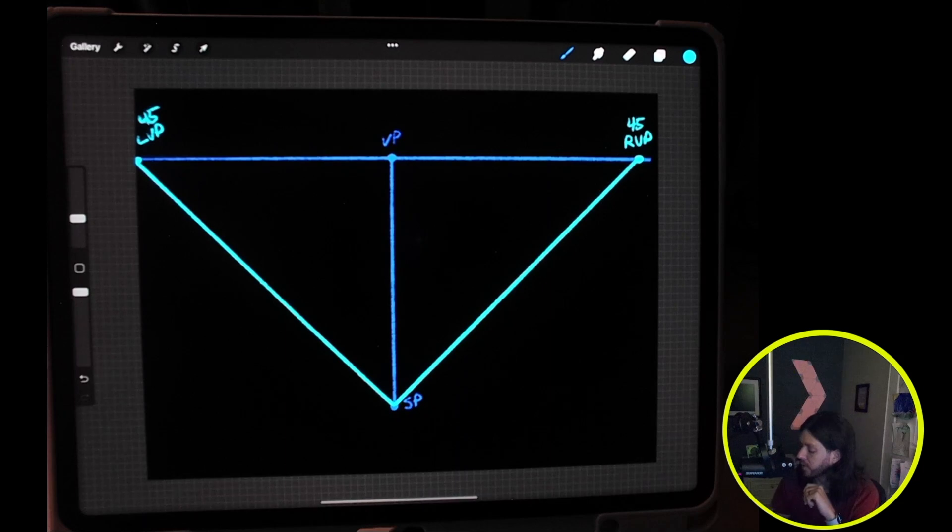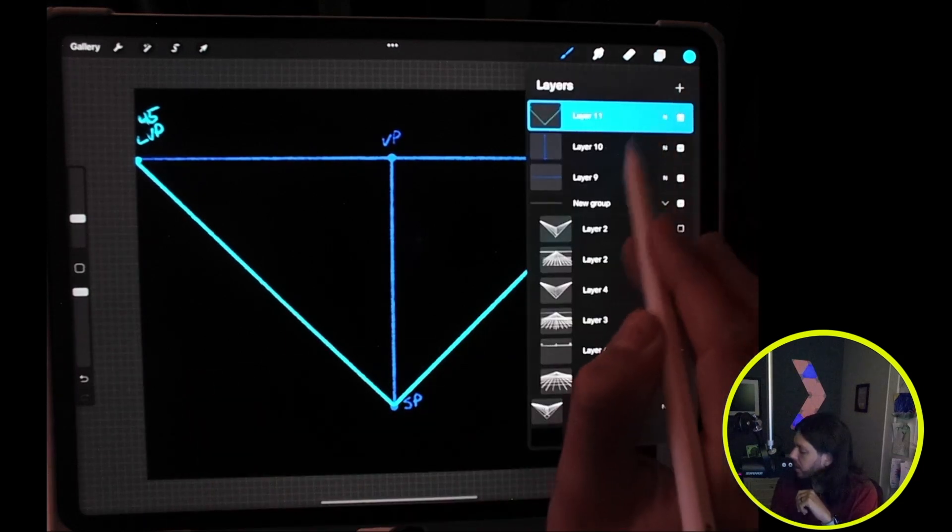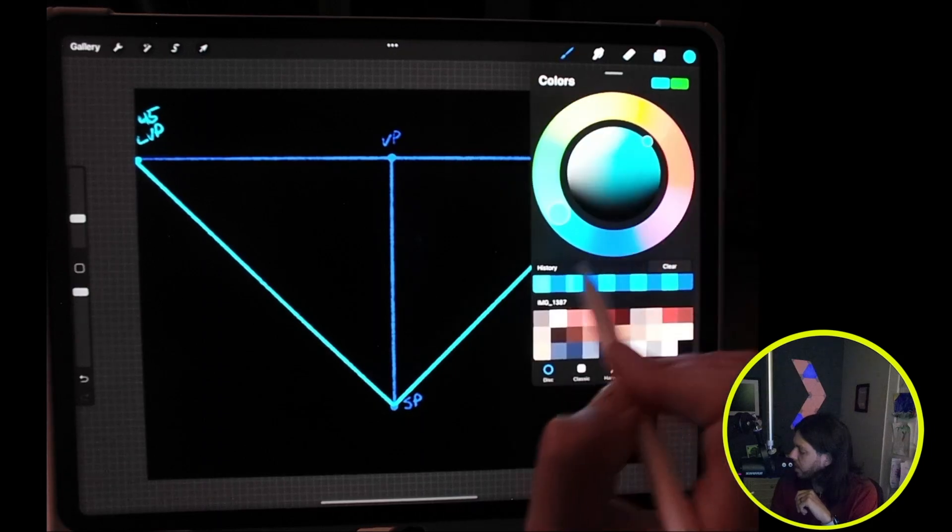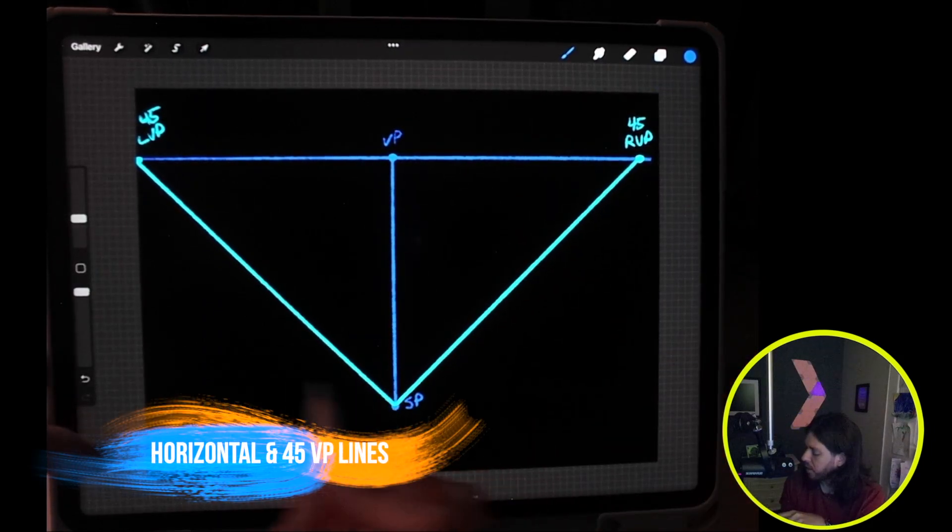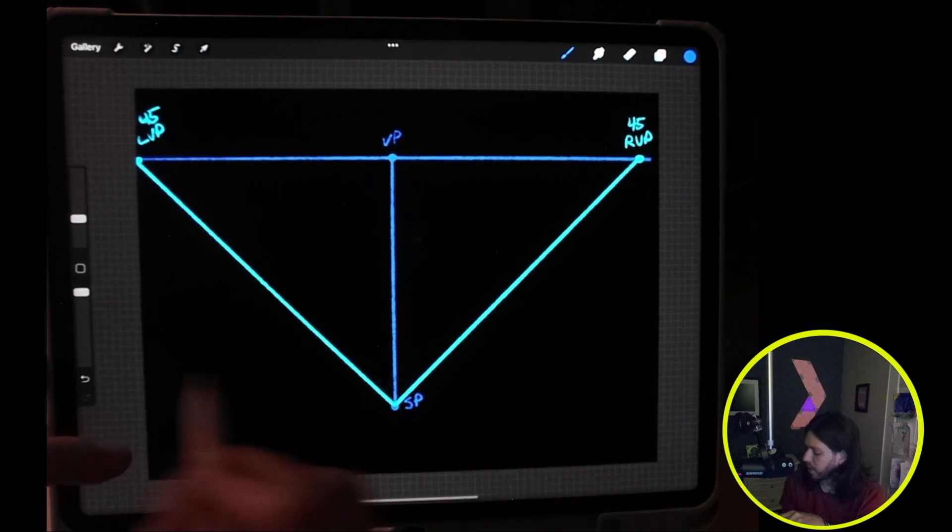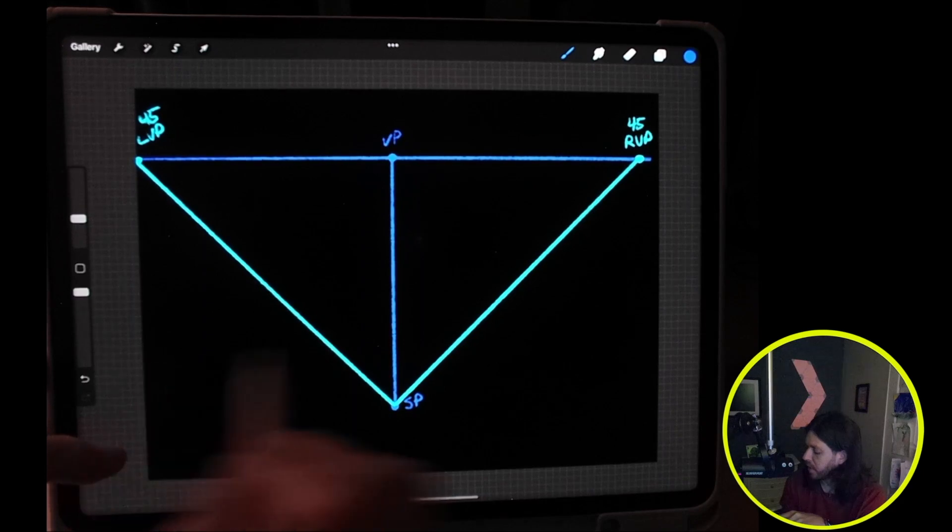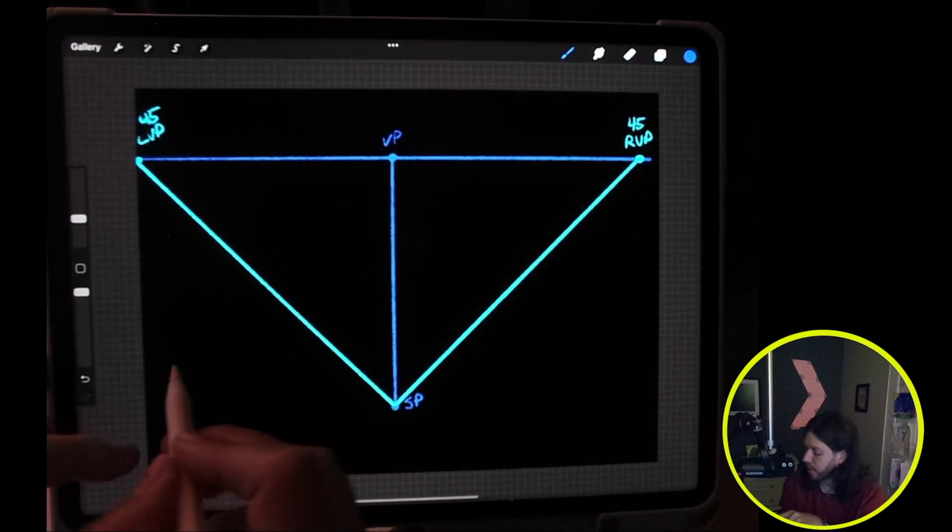All right, now that we have that we can start to draw our horizontal lines. So I'm going to come back to this layer and this color, and I can pick anywhere up here. Roughly the bottom of our square will be our first horizontal line, and then eventually they'll get smaller and smaller as they go toward the vanishing point.